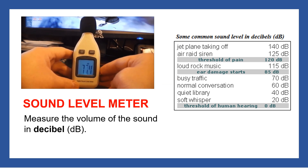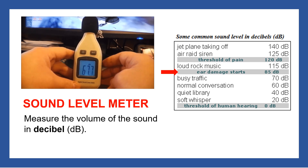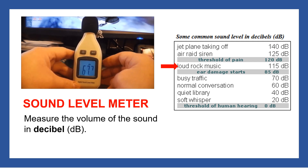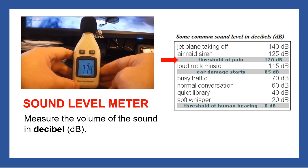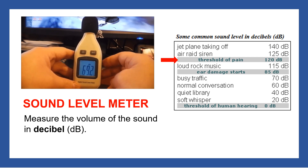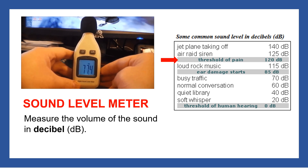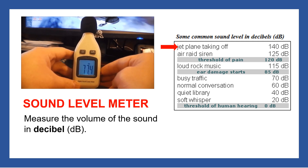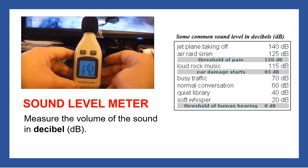Normal conversation is 60 decibels, busy traffic is 70 decibels, and at 85 decibels ear damage starts. Listening to loud rock music is around 115 decibels, which means at this level it can damage your ears. The threshold of pain is 120 decibels. An air raid siren is 125 decibels, and a jet plane taking off is around 140 decibels.